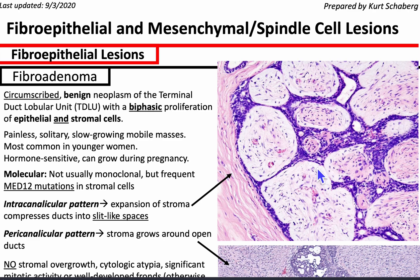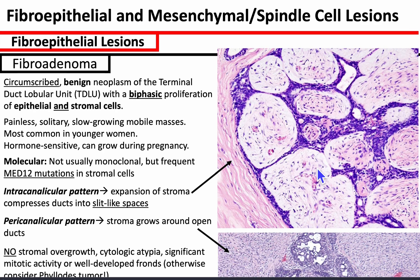Fibroadenomas are biphasic proliferations — benign neoplasms of the terminal duct lobular units (TDLUs), which are the elemental unit of breast histology. It's a biphasic proliferation of epithelial cells and stromal cells. Clinically, they are painless, slowly growing, and solitary, more common in younger women. They can enlarge during pregnancy because they are hormone sensitive. They're not usually monoclonal, but the stromal cells have frequent MED12 mutations.